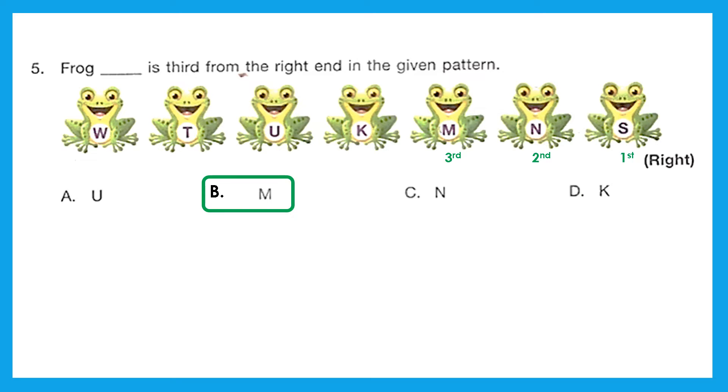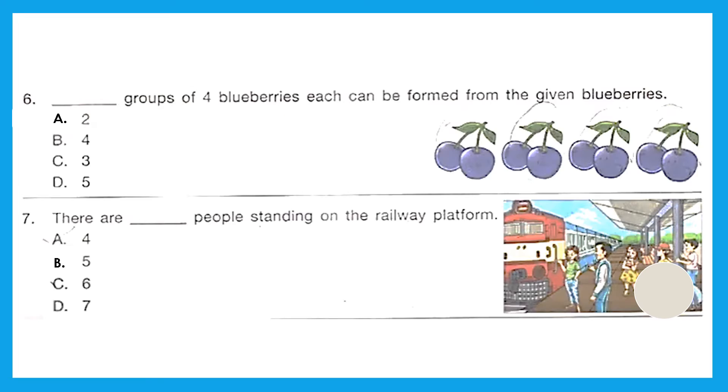Question 6: How many groups of four blueberries each can be formed from the given blueberries? So we have to make groups in which there are four blueberries. Let's start making the groups: one is this, and second is this. So we got only two groups of four blueberries. Answer is option A, two.